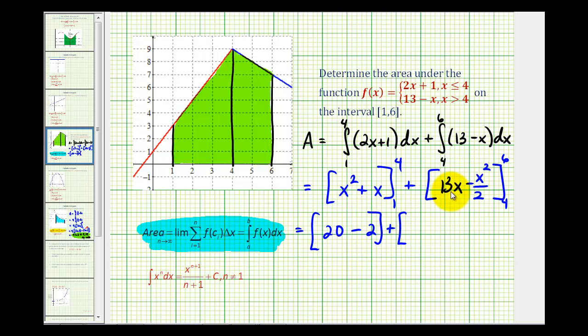Plus here we'll replace x with six first, so we'll have 13 times 6 minus 6 squared divided by 2. Well, 13 times 6 would be 78 minus 36 divided by 2, that's going to be minus 18, so that'll be 60. Minus 13 times 4 minus 4 squared divided by 2. Well, 13 times 4 is 52, and then 52 minus 16 divided by 2, or minus 8, that'll give us 44.